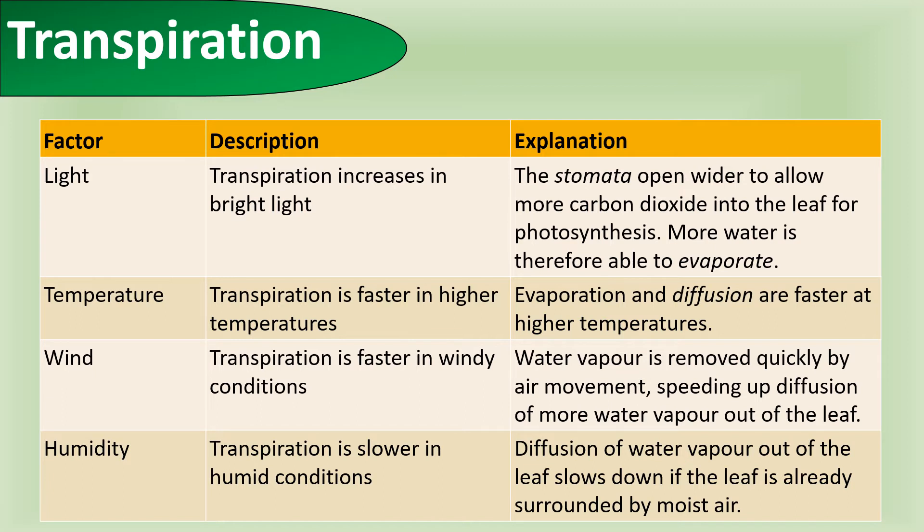Windy conditions will cause an increase in transpiration because water vapor is removed quickly by the air movement, speeding up diffusion of more water vapor out of the leaf. Humidity actually slows down transpiration. When the air is more humid, it has a high concentration of water in it, so therefore it's harder for the water to diffuse out of the leaf into the air because there is not so much of a concentration gradient.